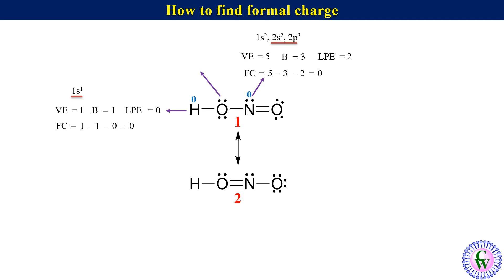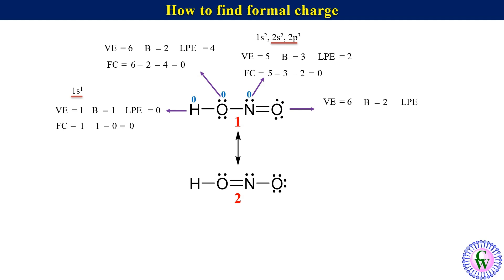For the first oxygen in structure 1: Ve = 6, B = 2 covalent bonds, Lpe = 4. Formal charge = 6 − 2 − 4 = 0. For the second oxygen in structure 1: Ve = 6, B = 2 covalent bonds, Lpe = 4. Formal charge = 6 − 2 − 4 = 0. So all atoms in structure 1 have a formal charge of 0.